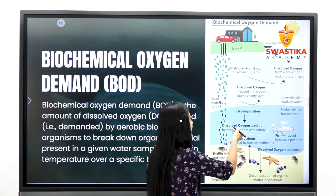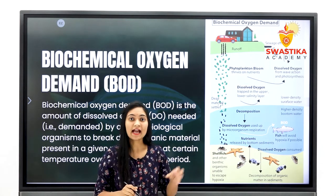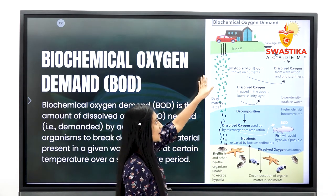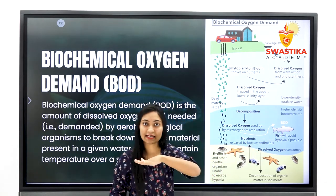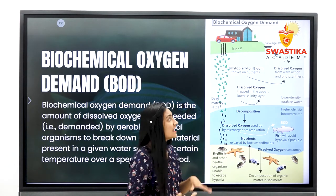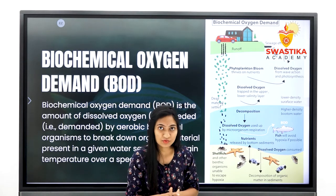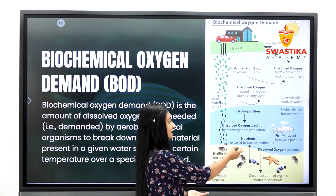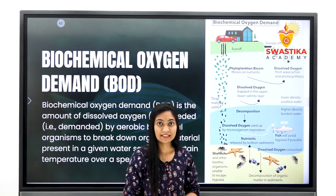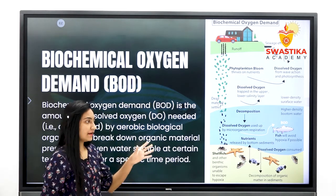यहाँ एक और चीज़ देखी जाएगी जो कि हमने पिछले lecture में पढ़ा था — eutrophication या algal blooms या water blooms। काफी सारे algal blooms water body के ऊपर एक layer बना लेंगे — green color की, red color की — जिन्हें हम बोलते हैं algal blooms या water blooms, जिनकी वजह से atmosphere से जो oxygen का supply water body में आ रहा है वो भी धीरे-धीरे कम हो जाएगा। Sediments में से जो aerobic organisms release हुए, वही algal blooms बनके ऊपर की layer बना लेंगे, जिसकी वजह से atmospheric oxygen भी water में आना कम हो जाएगी — यानि eutrophication की condition भी बढ़ जाएगी।